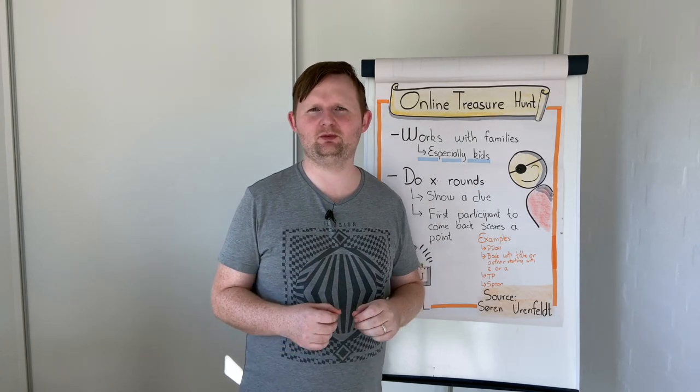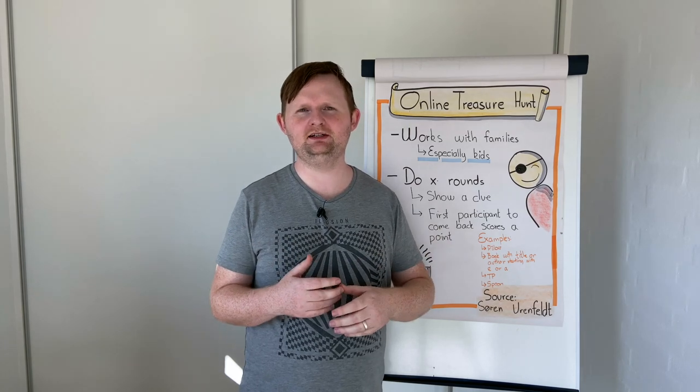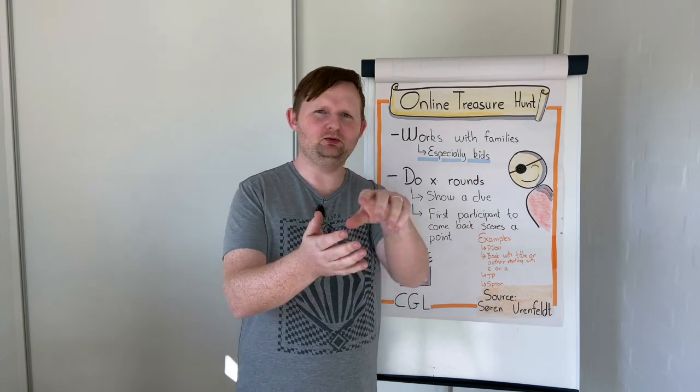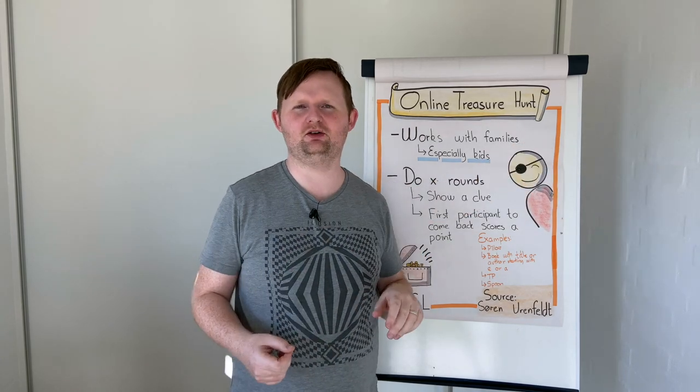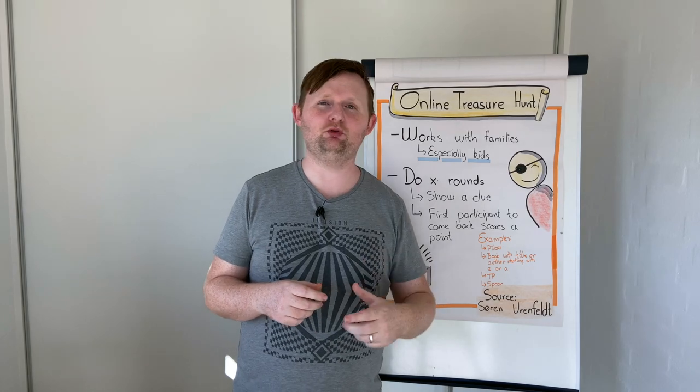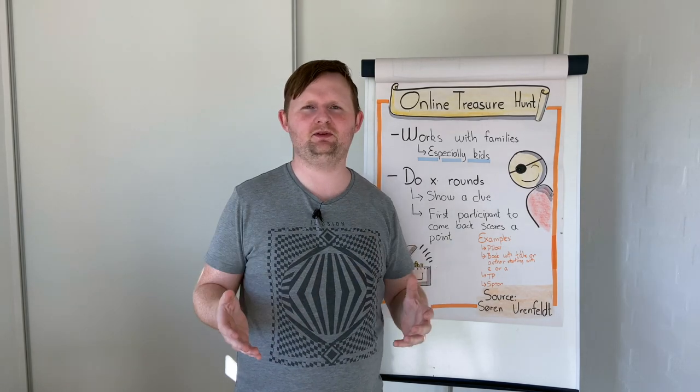Images are for the kids if we have some of these. Then it can be everything. So find a bottle of ketchup, so people will run into their home, find ketchup, and come back and show it. Or find a pair of jeans, or find a book where the author or the title has an A in it or starts with an A.